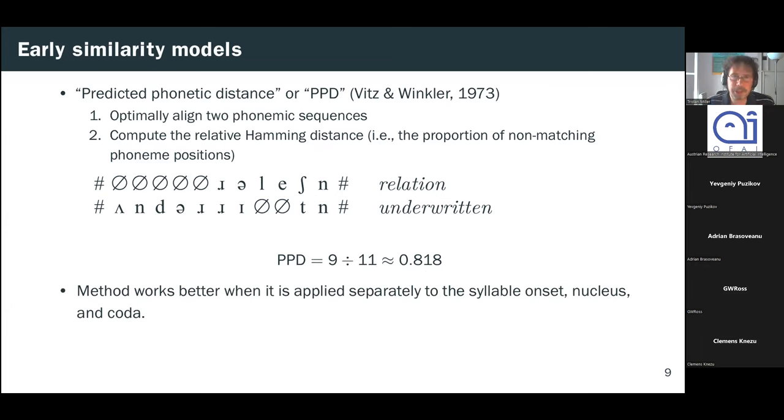Now, while this method actually correlates fairly well with human similarity judgments, it was found to work much better if you apply it separately to the syllable onset, the nucleus and the coda, and then take the average. So Witts and Witts and Winkler conclude, then, that perceived similarity owes much more to syllable structure than to raw phonemes. A major flaw with this approach, however, is that it glosses over the problem of how to optimally align the phonemes in the first place. It's a simple matter to write out the phonetic transcription of two words, but then deciding exactly which phonemes to pair across words is actually a very hard problem, and one to which considerable subsequent research has been devoted.